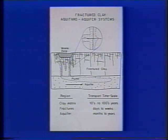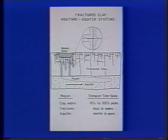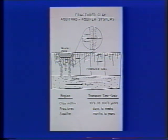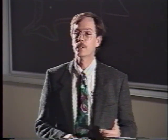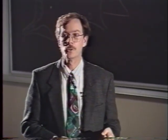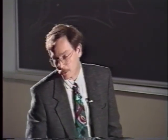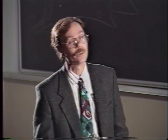In the absence of matrix diffusion — considering only advective transport — with a typical fracture aperture of about 25–30 microns, it can take on the order of days to a few weeks for a contaminant to travel downward into the lower aquifer. However, when you account for matrix diffusion, which acts as an attenuation process reducing solute flux along the fracture, the residence time of chemicals within the aquitard can be increased by many orders of magnitude. Transport times in the clay matrix are tens to hundreds of years; in fractures, days to weeks; and in the aquifer, months to years.